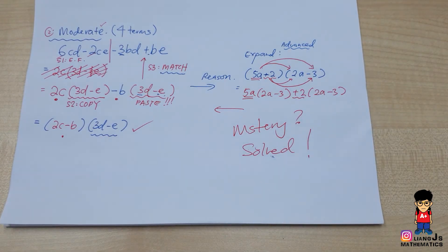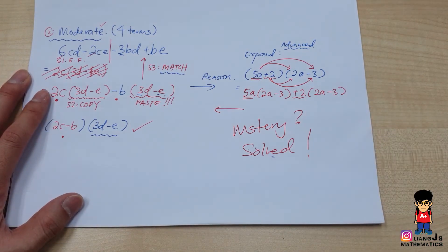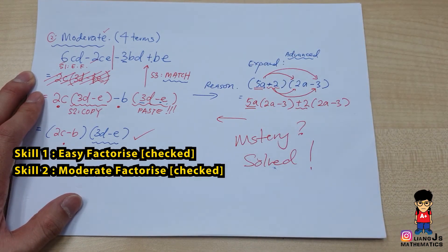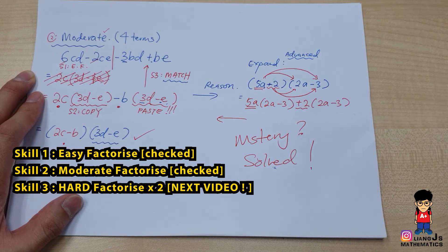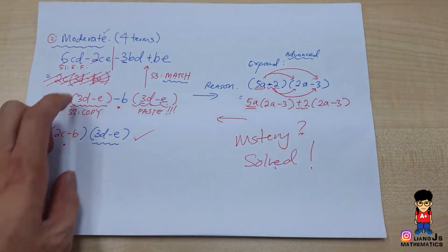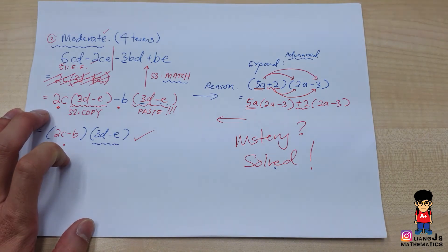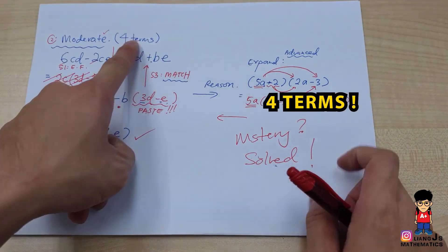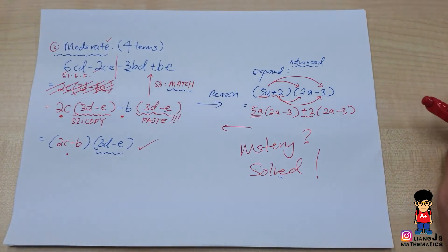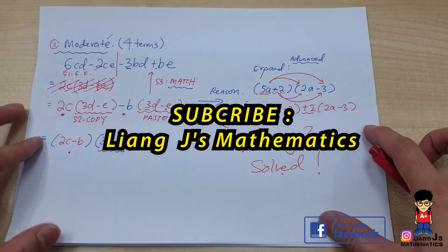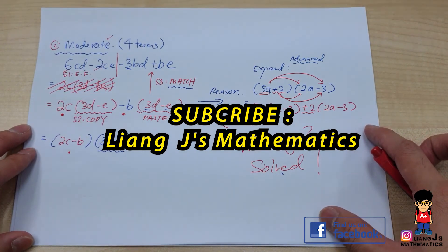Easy, moderate, and hard are not difficulty levels — they are names for different factorization techniques, used so you can familiarize yourself with the question types. If you like this video, share, subscribe, and tag your friends. Stay tuned for the next video where we cover the hard version of factorization. Ciao!